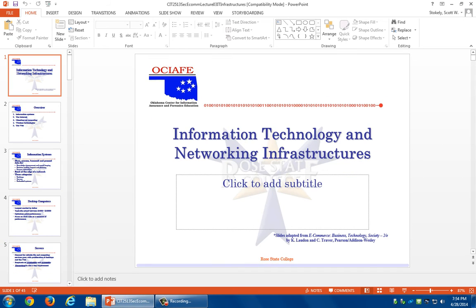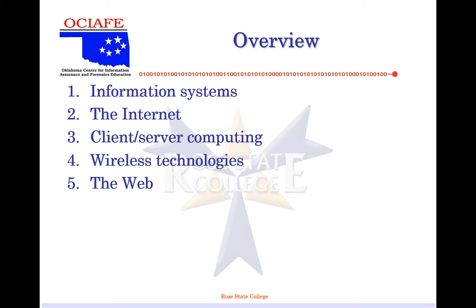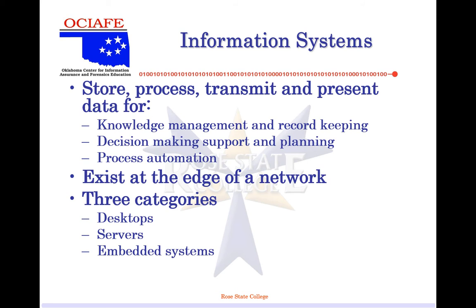Now y'all ready for the network infrastructure slides? We're talking about information systems, the internet, client-server computing, wireless technologies, and the web — we should go through this in a breeze. Information systems — what do they do? They store, process, transmit, and present data. They can exist at the edge of a network and be in three categories: desktop, server, or embedded system. Usually if it's on the edge of the network, it's in a DMZ.